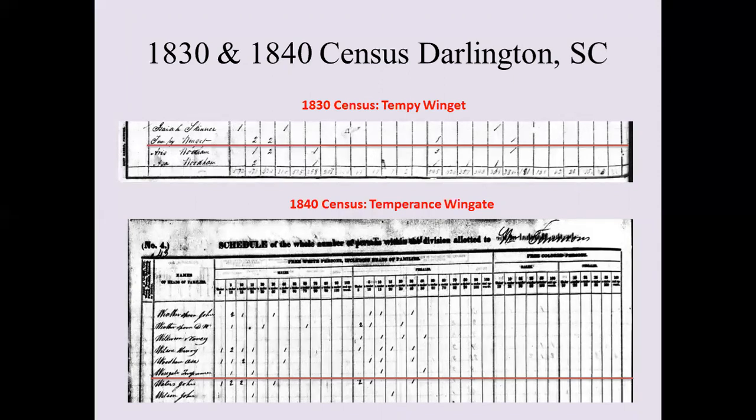By 1840 she's still in Darlington, but her name is spelled out as Temperance Wingate. Even though these pre-1850 census records can be quite difficult to track, if you make a chart to denote how many males and females are in the household and their age groups, you're still able to follow them through the census records.